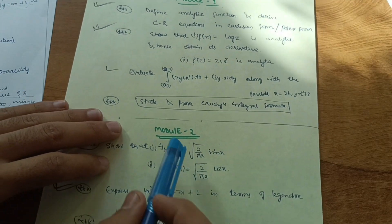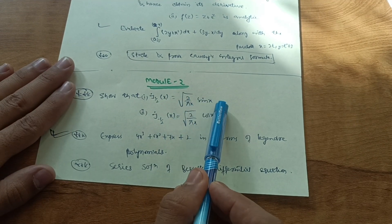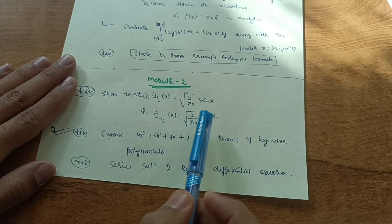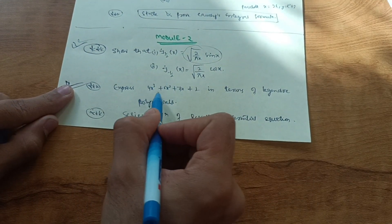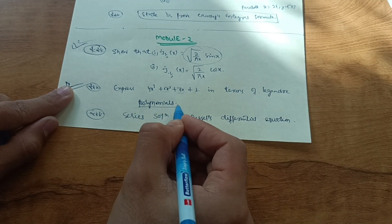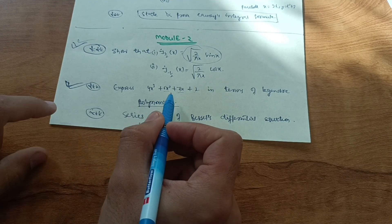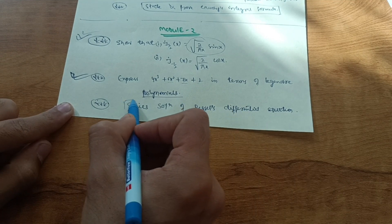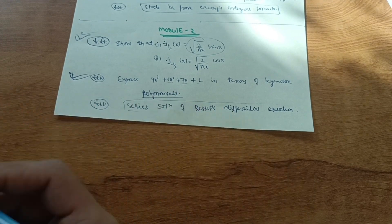Now cover Module 2 last. The most important questions are: show that J_{1/2}(x) = √(2/πx) · sin(x) and J_{−1/2}(x) = √(2/πx) · cos(x) — definitely one of these will come in the exam. Also express a polynomial like x⁴ + 4x³ + 6x² + 7x + 2 in terms of Legendre polynomials — try three to four such problems to cover seven marks. Also focus on the series solution of Bessel's differential equation.